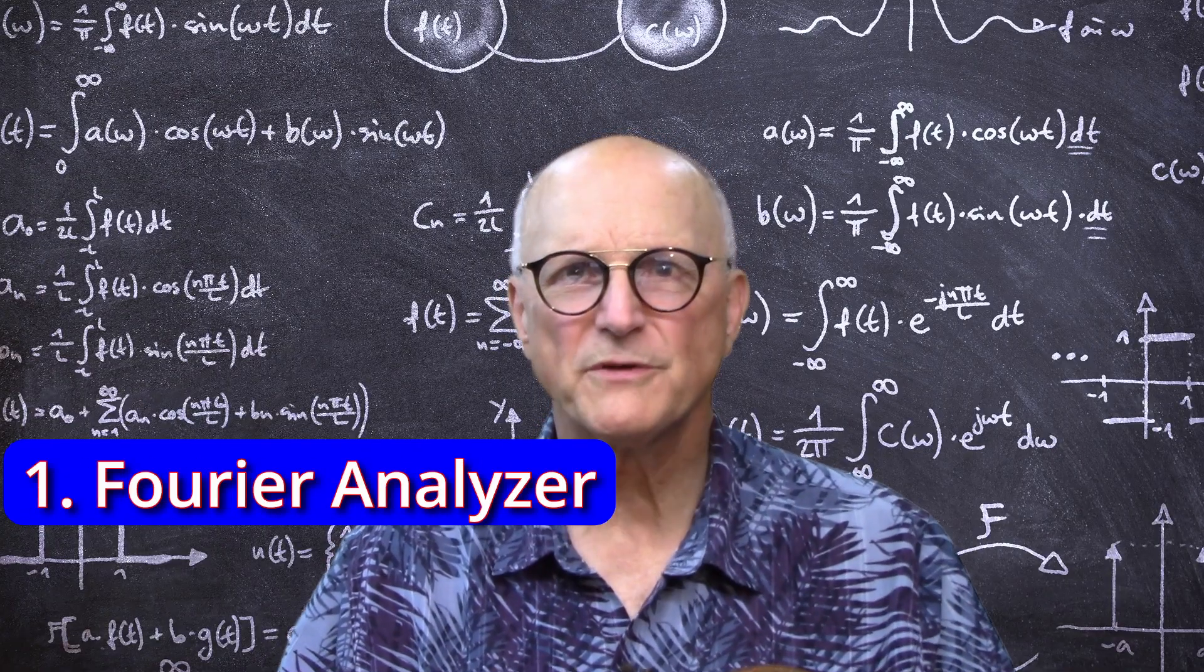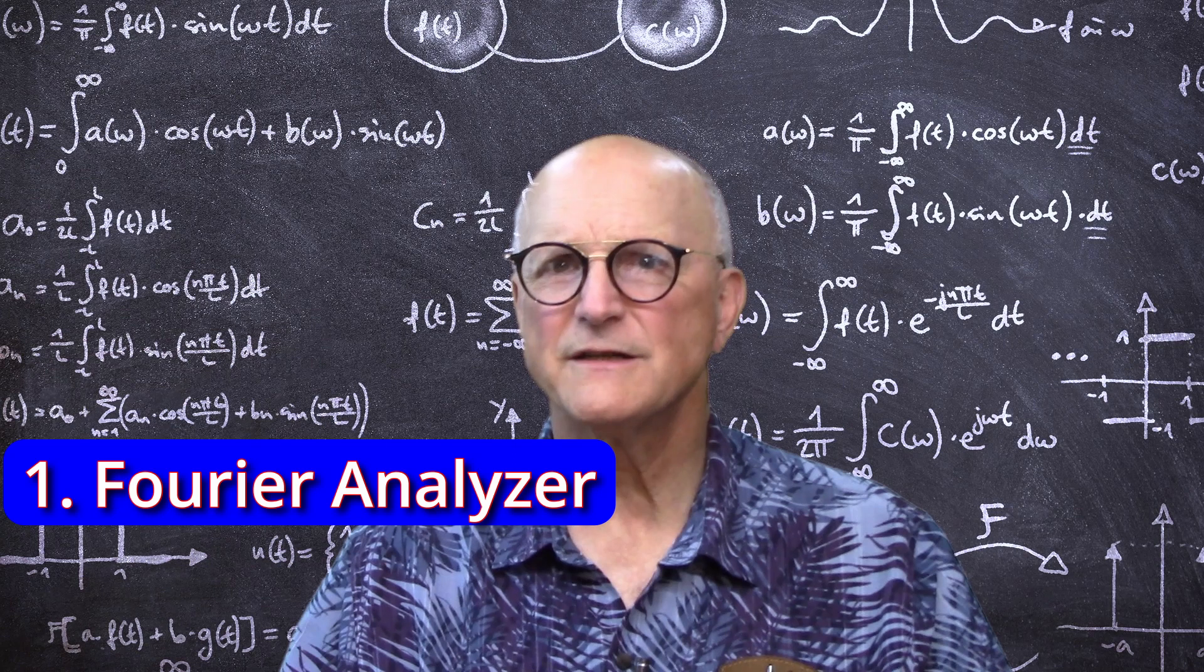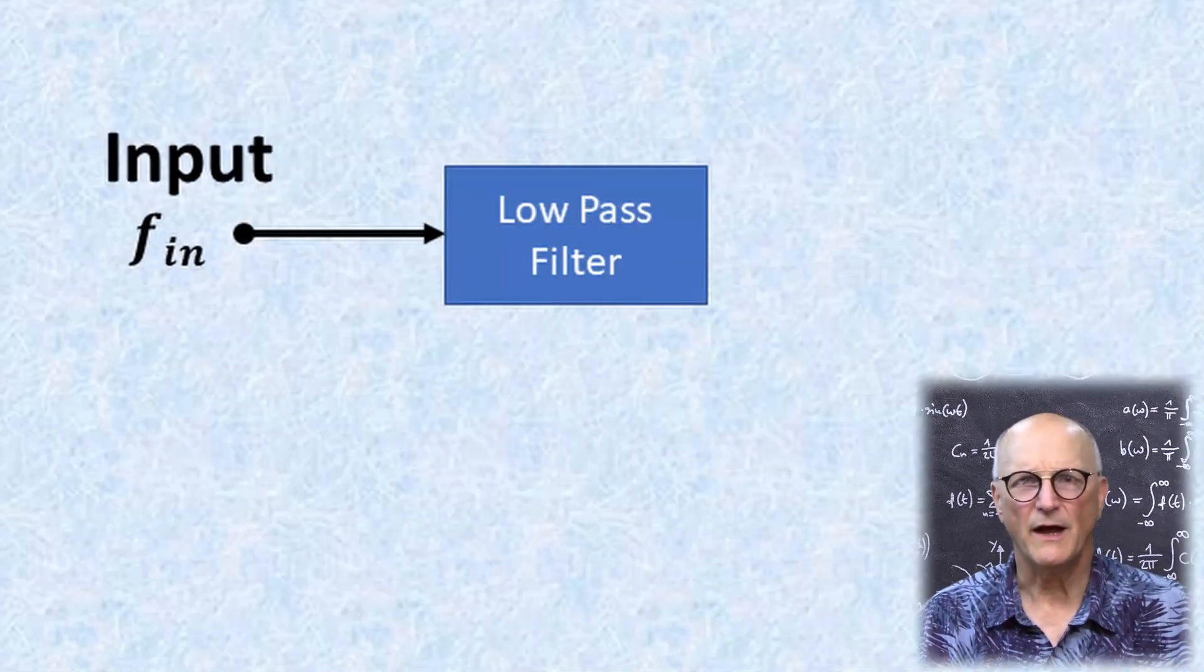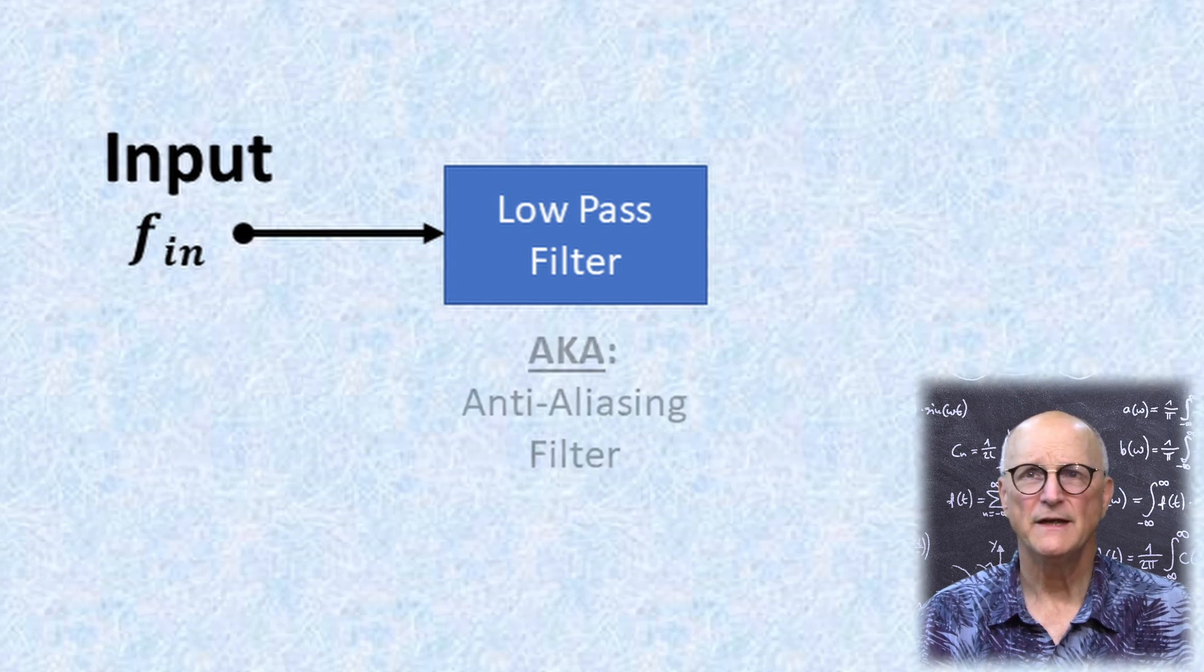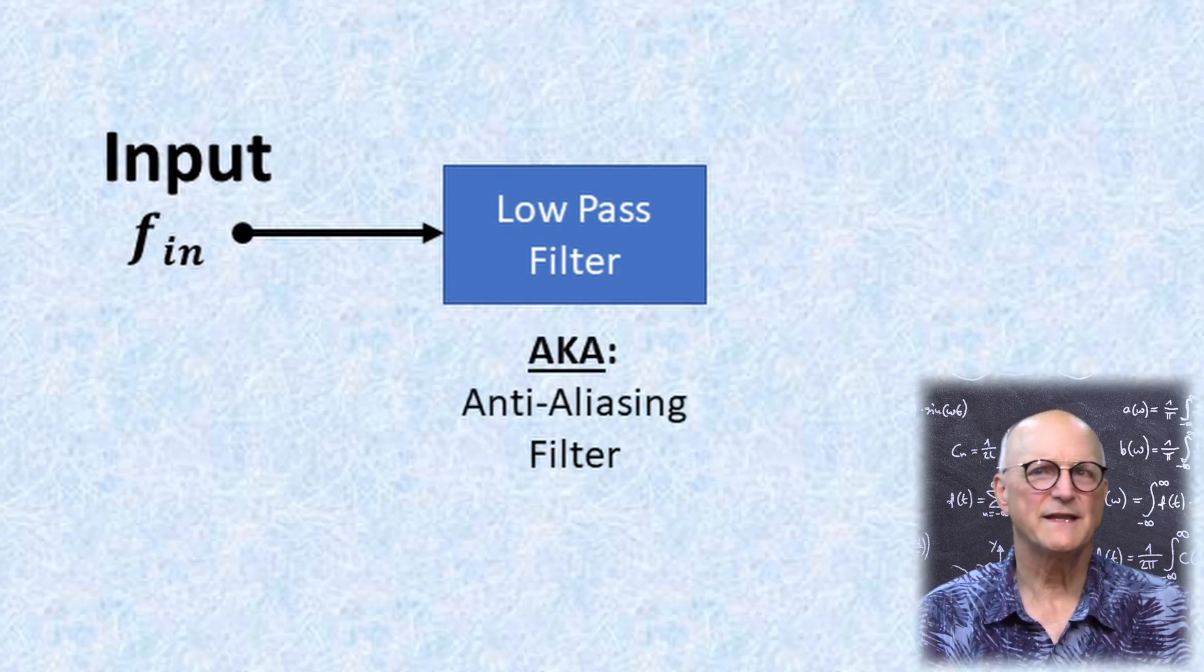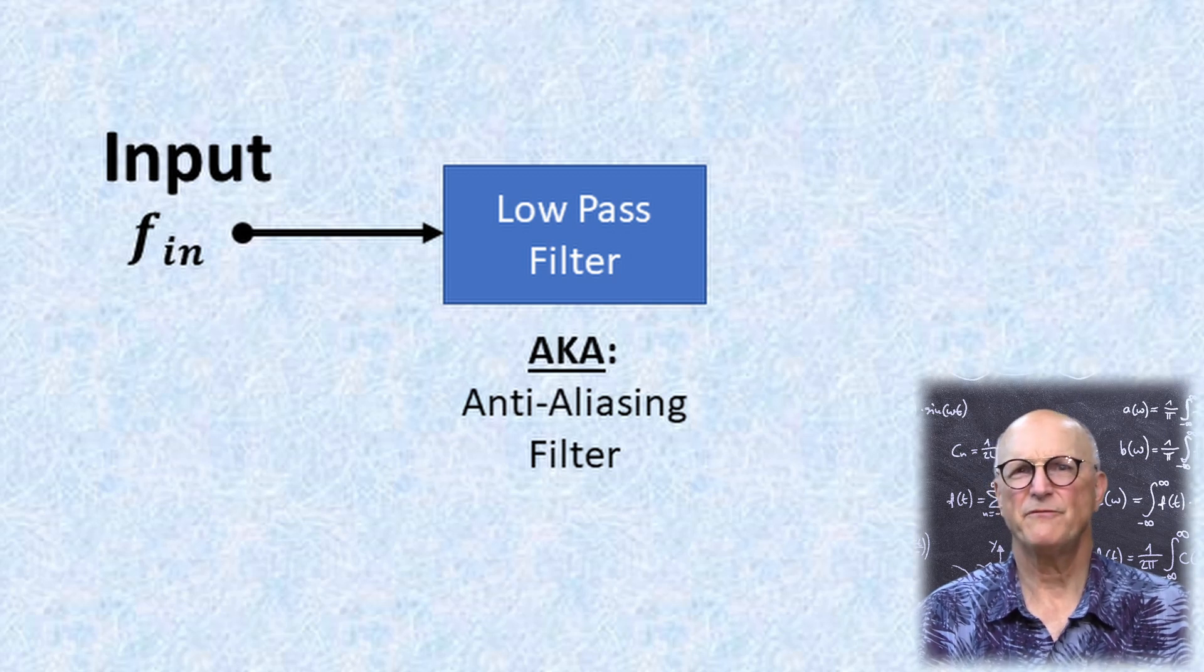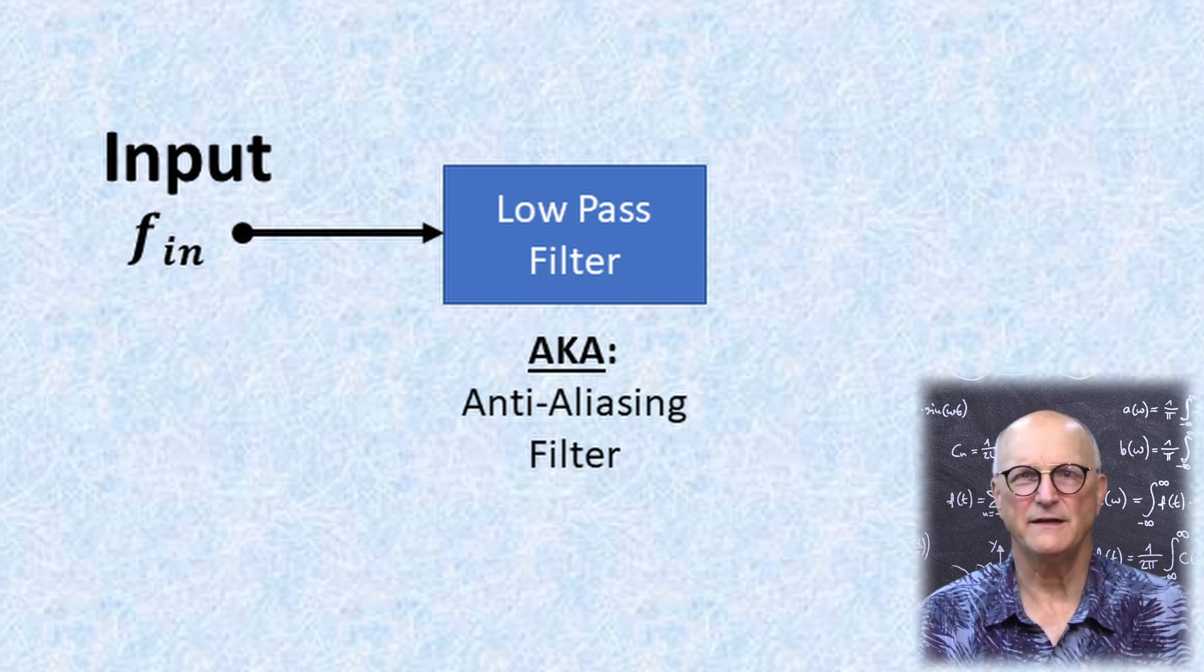From a hardware perspective, the Fourier analyzer looks something like this. The input is applied to a low-pass filter, also known as the anti-aliasing filter. It is used to prevent what we might call ghosts in the data.